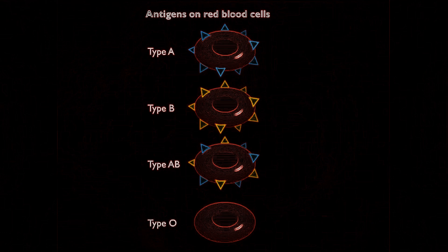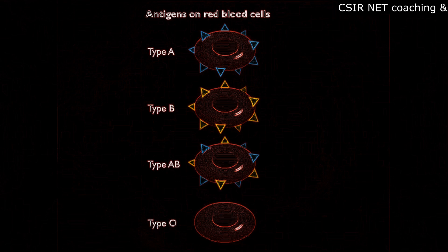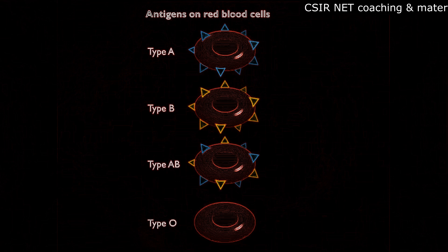Type 2 hypersensitivities involve interactions of antibodies and surface antigens of cells, followed by complement-assisted lysis of these cells. A typical example is mismatched blood transfusions, which we are going to see here in this video.